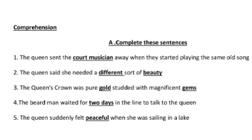Third one is: The queen's crown was pure gold studded with magnificent gems. The queen's crown was pure gold and had gems studded in it.